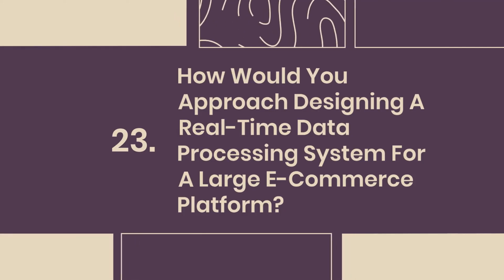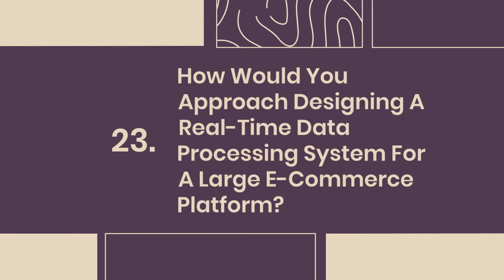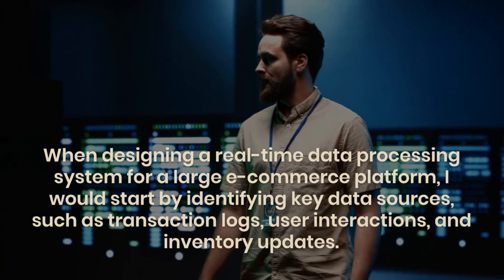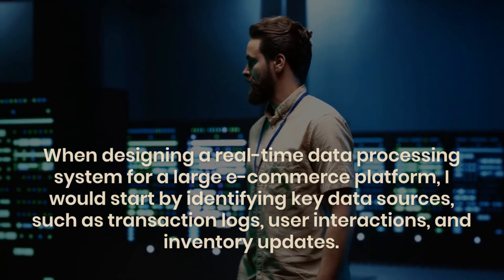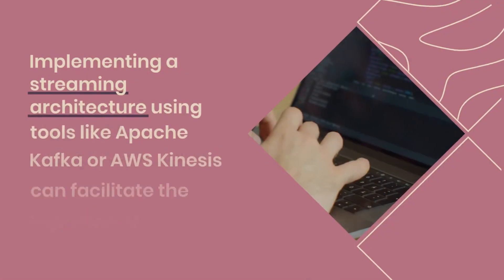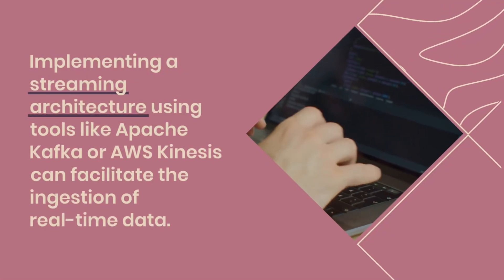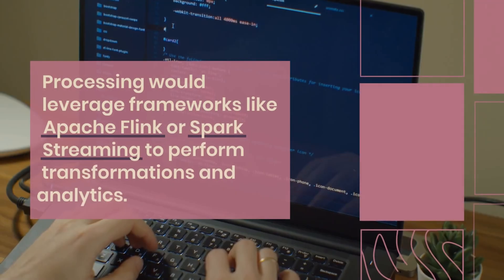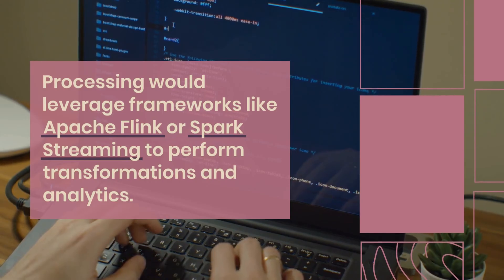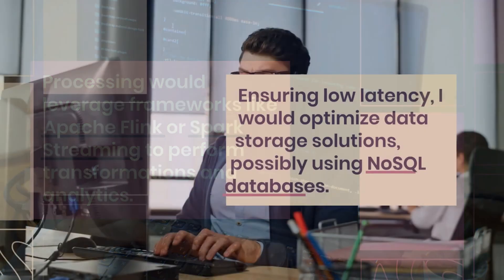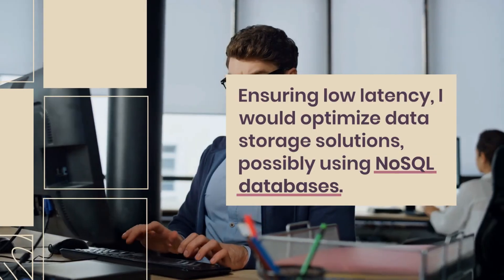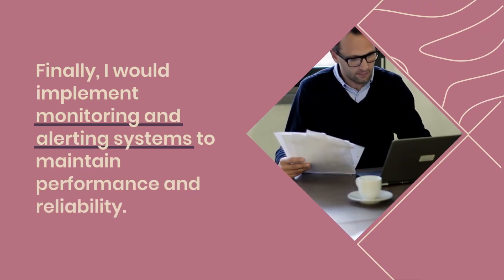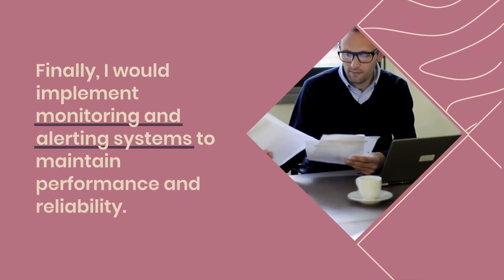Question 23: How would you approach designing a real-time data processing system for a large e-commerce platform? When designing a real-time data processing system for a large e-commerce platform, I would start by identifying key data sources, such as transaction logs, user interactions, and inventory updates. Implementing a streaming architecture using tools like Apache Kafka or AWS Kinesis can facilitate the ingestion of real-time data. Processing would leverage frameworks like Apache Flink or Spark Streaming to perform transformations and analytics. Ensuring low latency, I would optimize data storage solutions, possibly using NoSQL databases. Finally, I would implement monitoring and alerting systems to maintain performance and reliability.